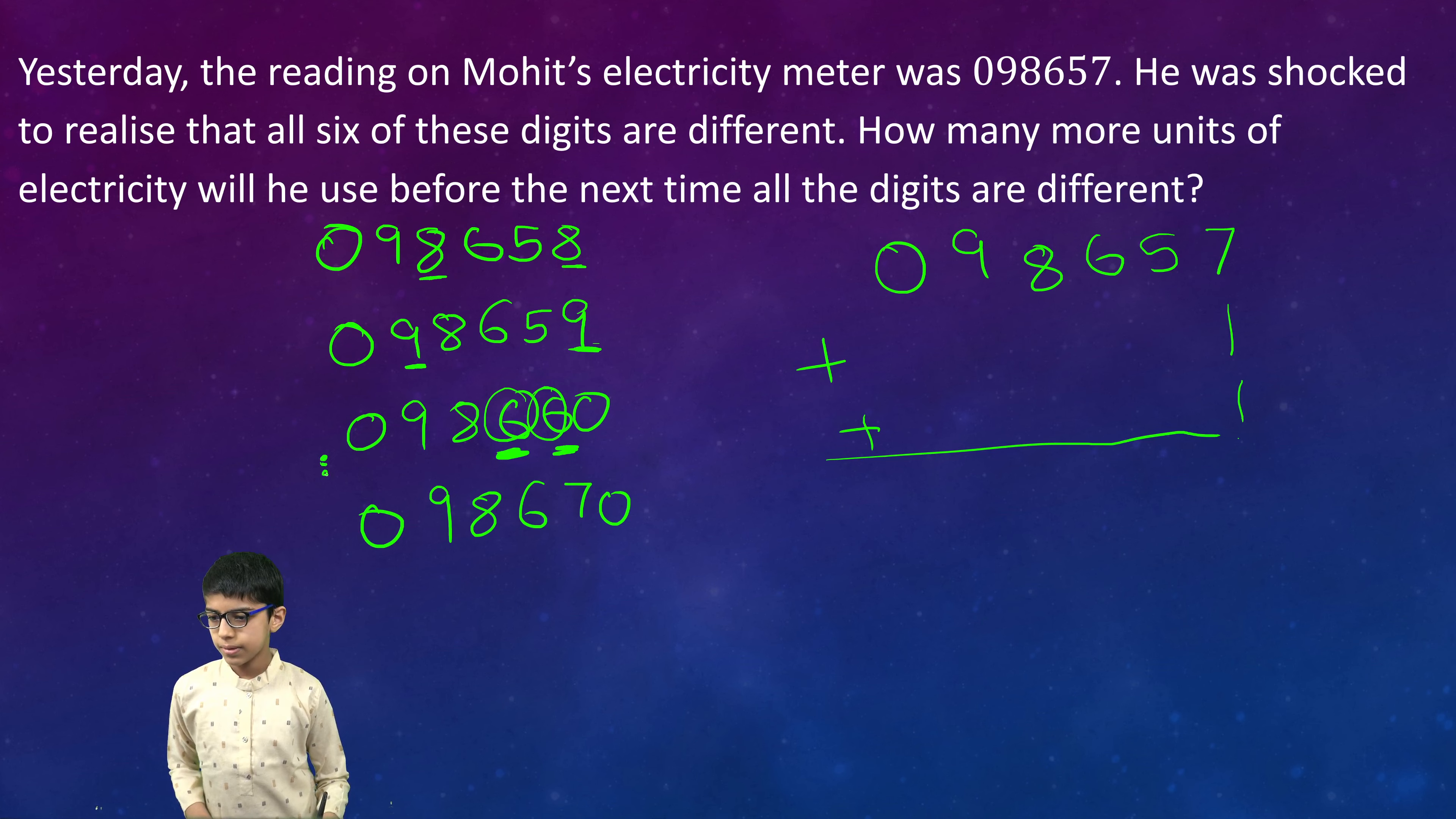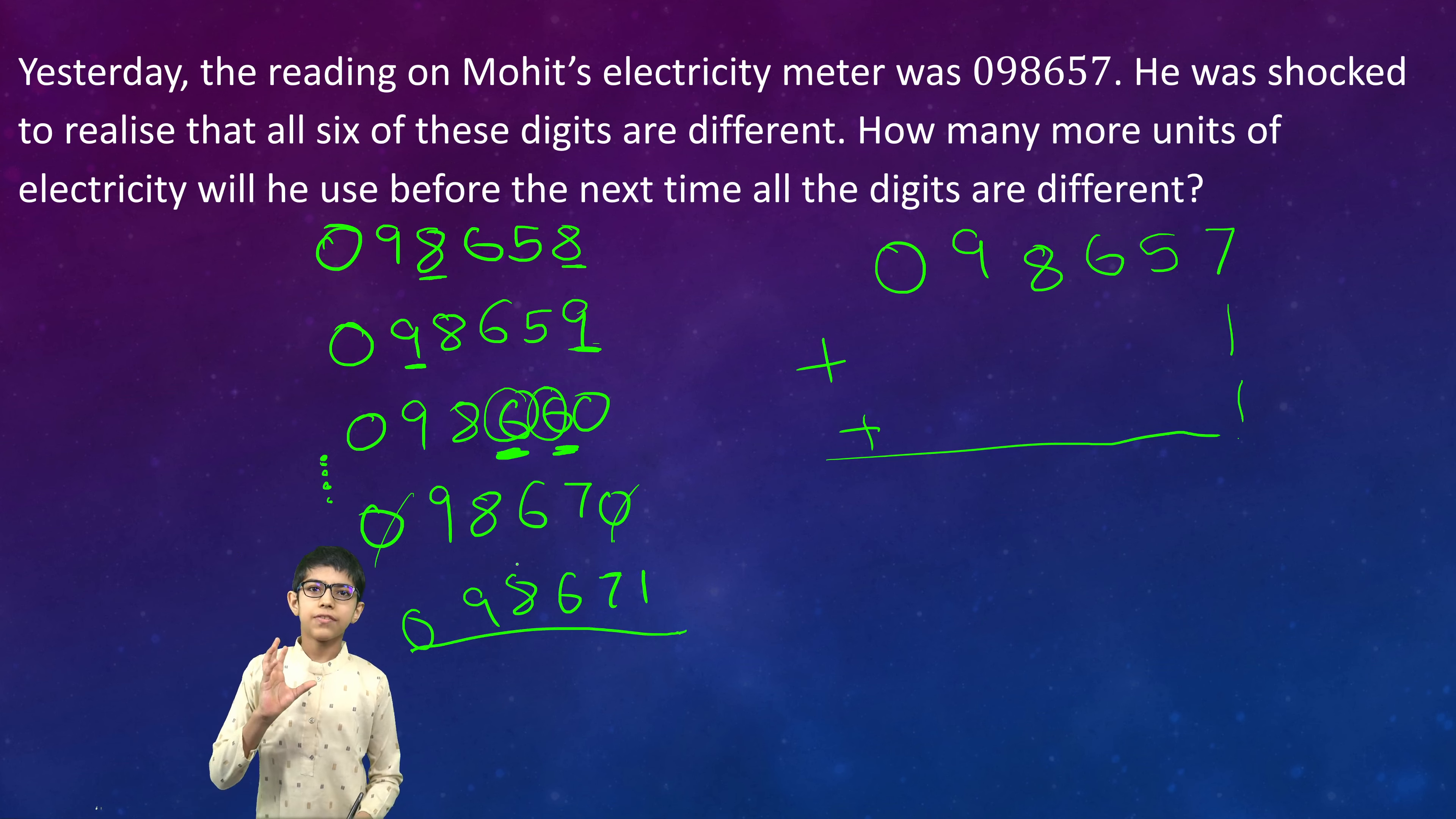Here there are many more numbers. Now here also 0 and 0 match, so we will again add one. Then we get the number in the tens and ones place - it is 71. Therefore the final answer would be 098671 because none of the numbers match. Thank you very much.